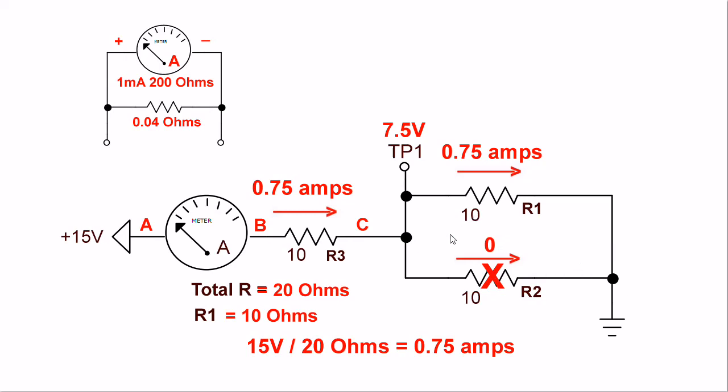Now we don't have the parallel combination that gave me 5 ohms. I have a single 10 ohm resistor, and so our total resistance this time is 20 ohms. 10 plus 10 is 20 ohms.